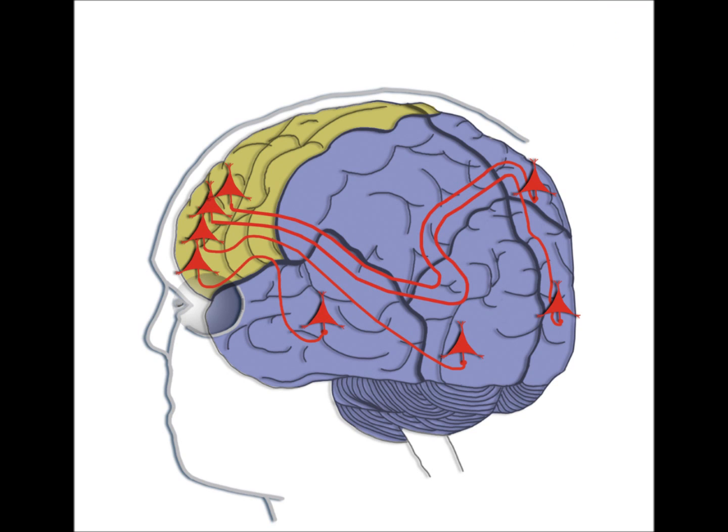Notice, however, that the physical length of connections between the prefrontal cortex and the neurons in the posterior cortex vary significantly. Some connections are short, while other connections are much longer.